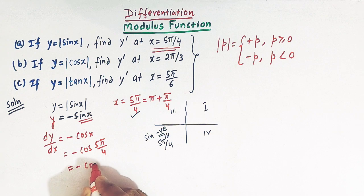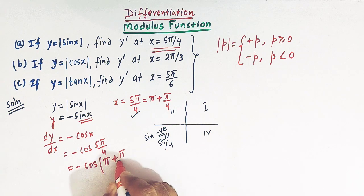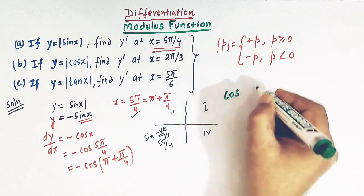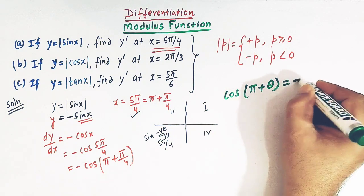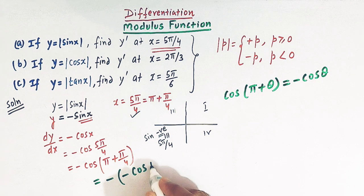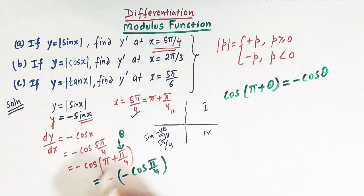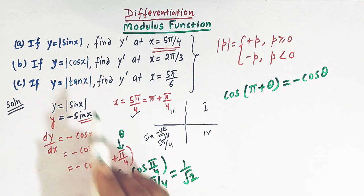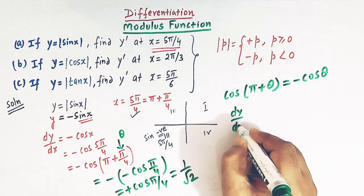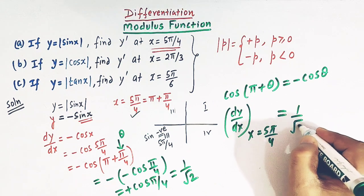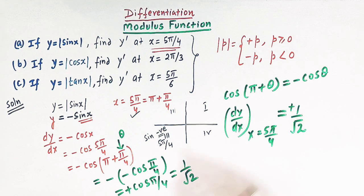We can write 5π/4 as π plus π/4. From trigonometry, cos(π + θ) equals negative cos θ. So we have minus times negative cos(π/4), which gives plus cos(π/4). Since cos 45° equals 1/√2, the derivative dy/dx at x equal to 5π/4 equals 1/√2. We can see that this derivative is positive.